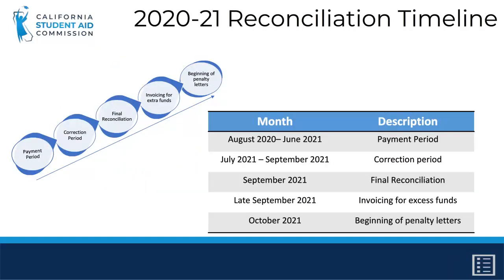Before we get into the operational details of reconciliation, let's take a look at the timeline. For example, let's look at the 2020-2021 reconciliation timeline. From August 2020 to June 2021, campuses will disburse the bulk of their Cal Grant awards and also report the payments in the WebGrants system. In July 2021 to September 2021, schools generally make any final necessary corrections.